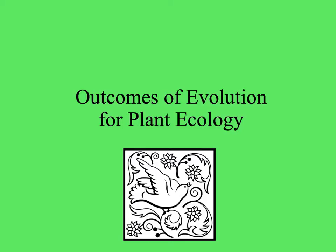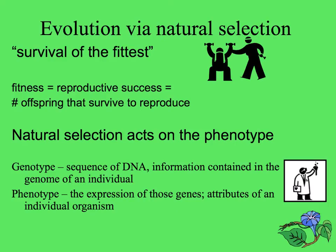Let's go over some of the basic things in evolution that affect plants as they do other organisms. Evolution via natural selection is sometimes called survival of the fittest, where fitness isn't physical fitness but reproductive success — the number of offspring that survive to reproduce. It's important to remember that natural selection acts not on the genotype but the phenotype, the expression of the genes in an individual.